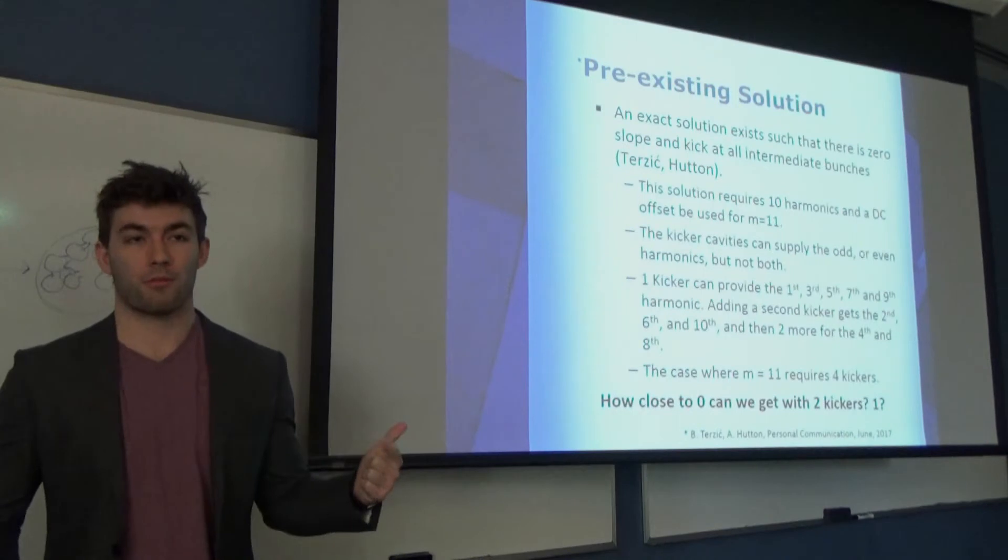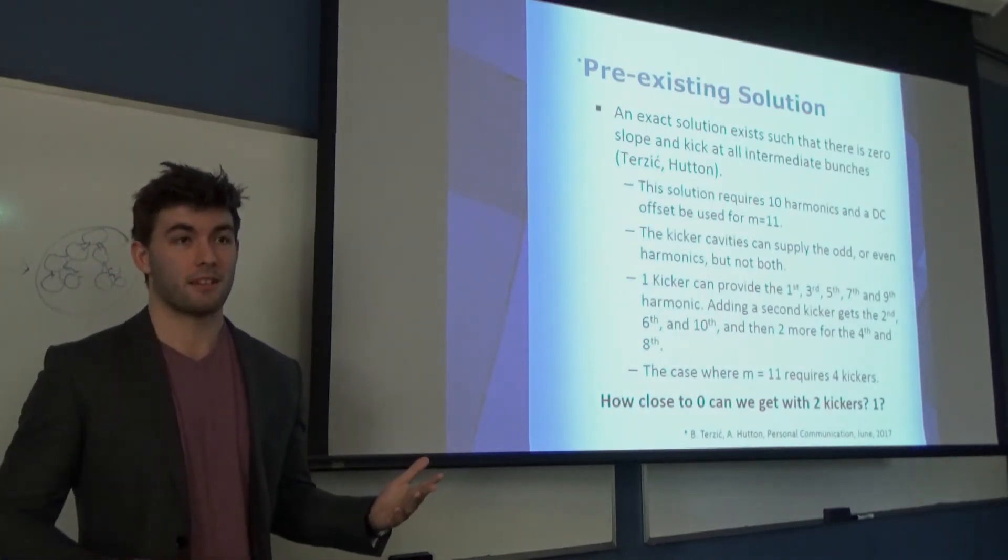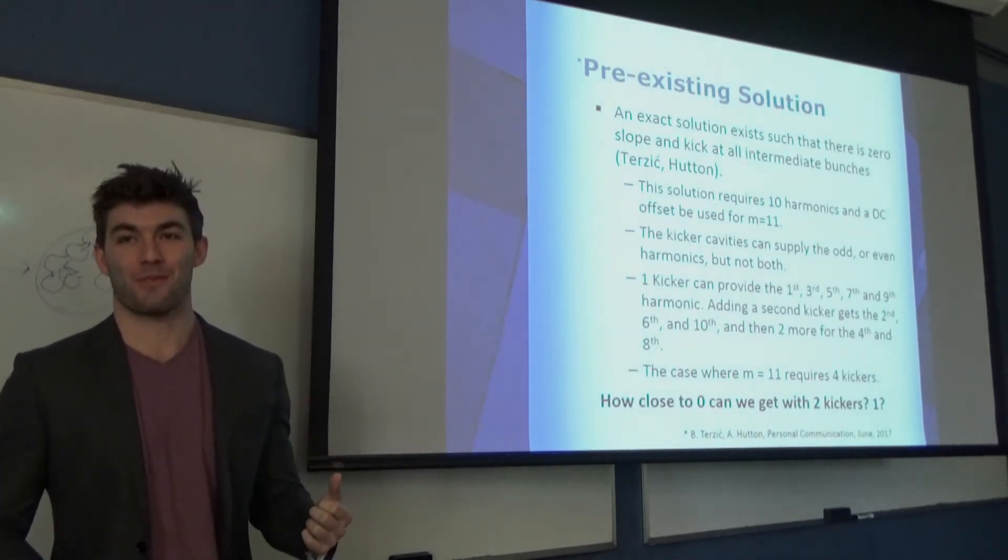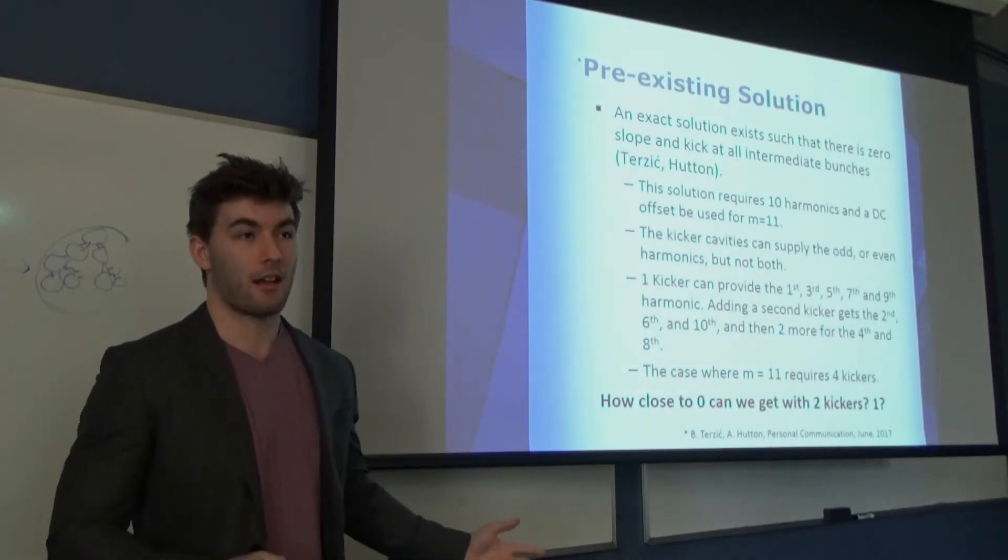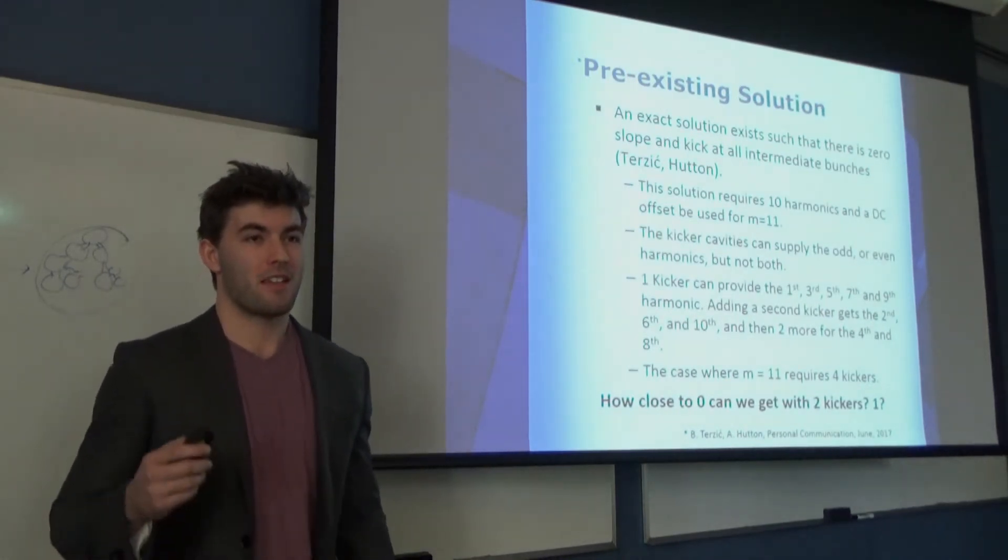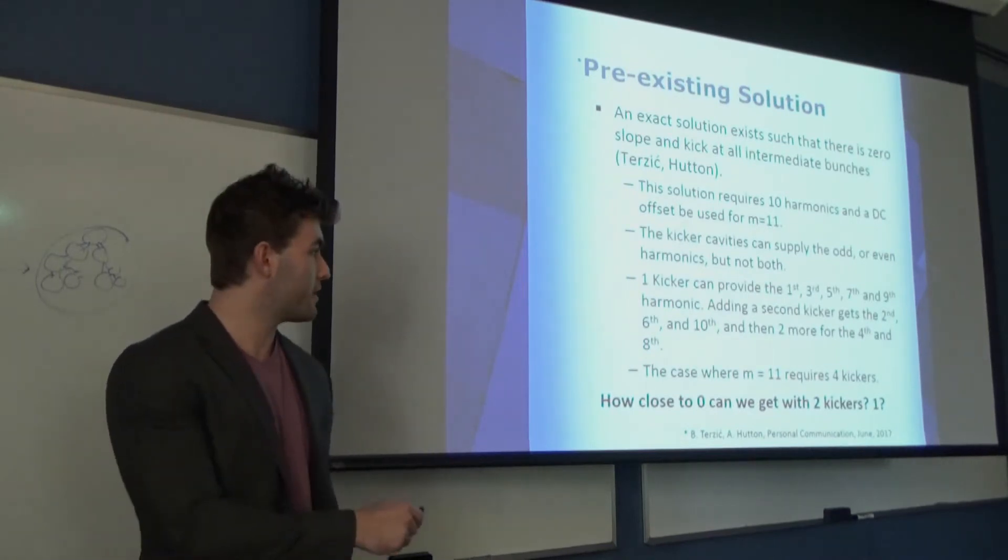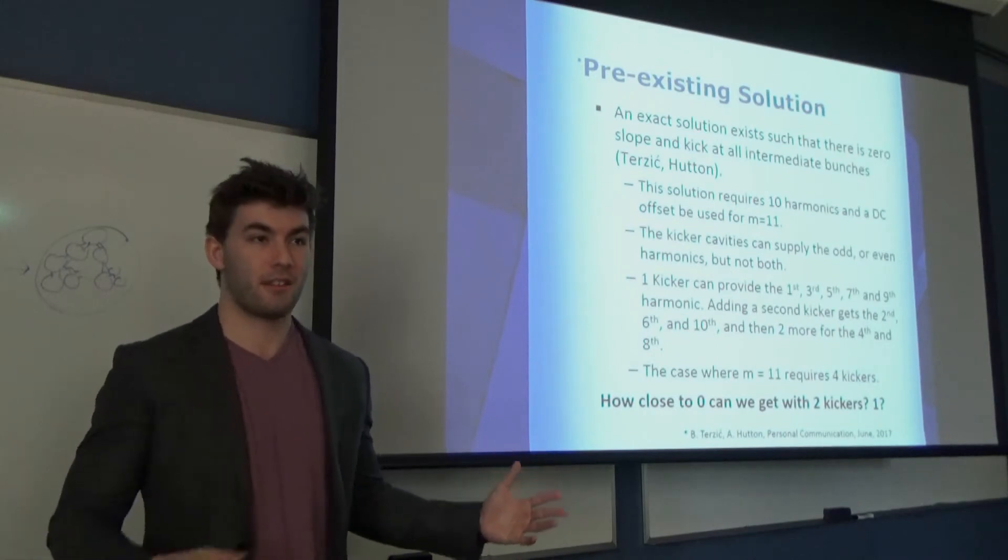One kicker can provide 1, 3, 5, 7, 9. Adding a second kicker and doubling the frequency can get you 2, 6, and 10. And then adding two more of those kickers can get you the rest. So all in all, it requires four kicker cavities to get the perfect solution. That costs on the order of about half a million dollars to use all of those pieces of copper kickers. So how close can we get to that zero solution if we use two or one kicker?